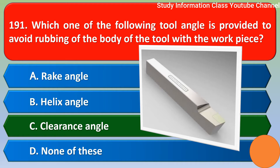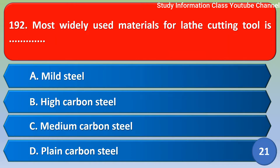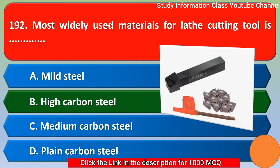Next question. Most widely used material for plate cutting tool is: Option A, mild steel; Option B, high carbon steel; Option C, medium carbon steel; Option D, plain carbon steel. The correct answer is Option B, high carbon steel.